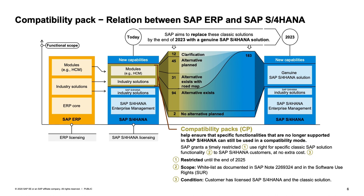The compatibility scope provides time-restricted use rights for specific classic SAP solutions within S/4HANA at no extra cost. These use rights are temporary — restricted until the end of 2025 — and the scope is documented as a whitelist in the SAP note. The license condition requires the customer to have licensed both SAP S/4HANA and the classic solution. SAP is currently building successor functionality in S/4HANA and plans to have alternatives ready by end of 2023, giving customers sufficient time to migrate to successor functionalities.